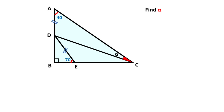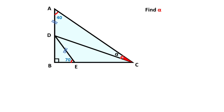Hello everyone. In this video we have one triangle where these two side lengths are given as equal to each other. Here is given 40 degrees and here is given 70 degrees, and alpha is asked.